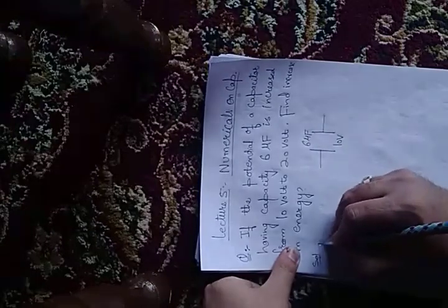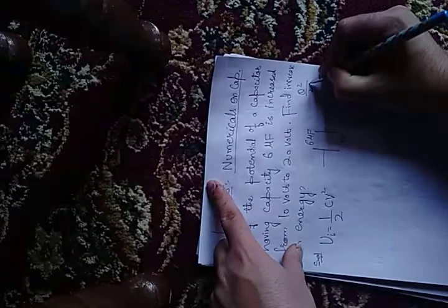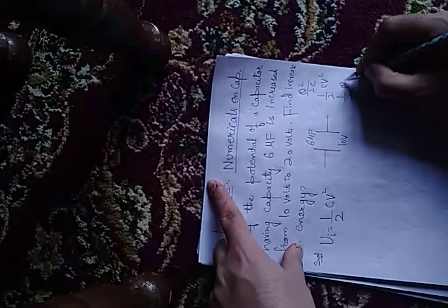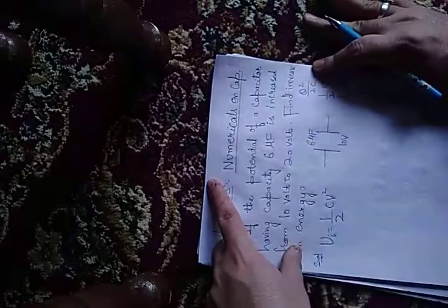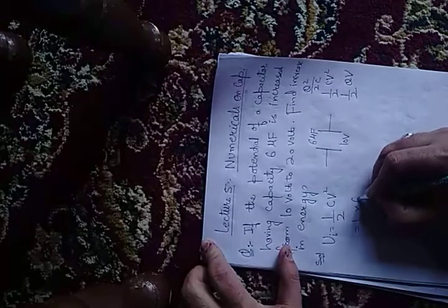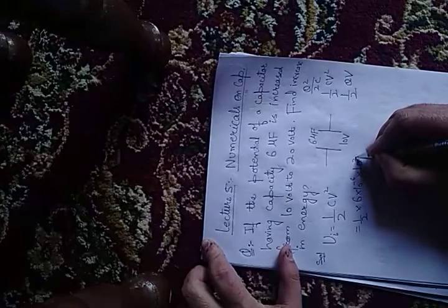You have a capacitor with capacitance 6μF and potential 10V. So we will write initially energy is half of... because you've studied three energy relations: Q²/2C, ½CV², ½QV. Now when to use which depends on the data. Here I know C and V, so I'll use this relation. Half, C is 6×10⁻⁶, V is 10 square.